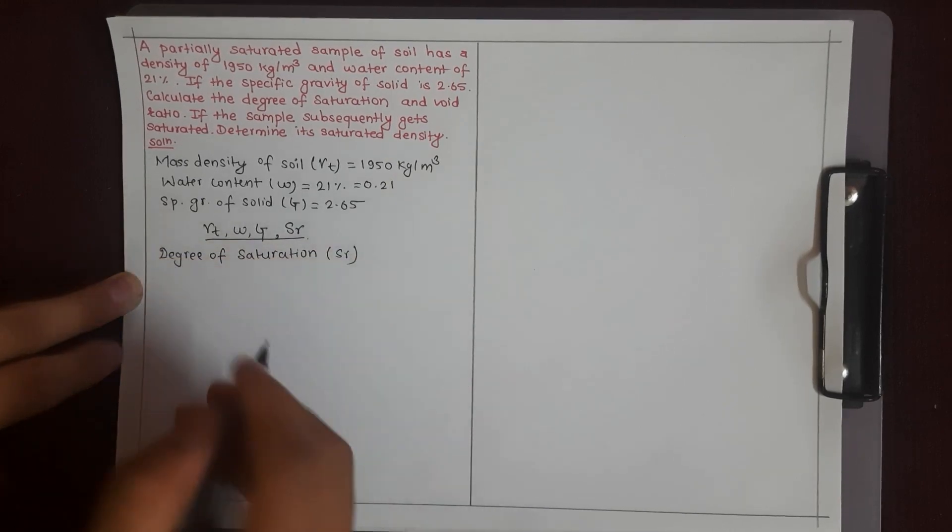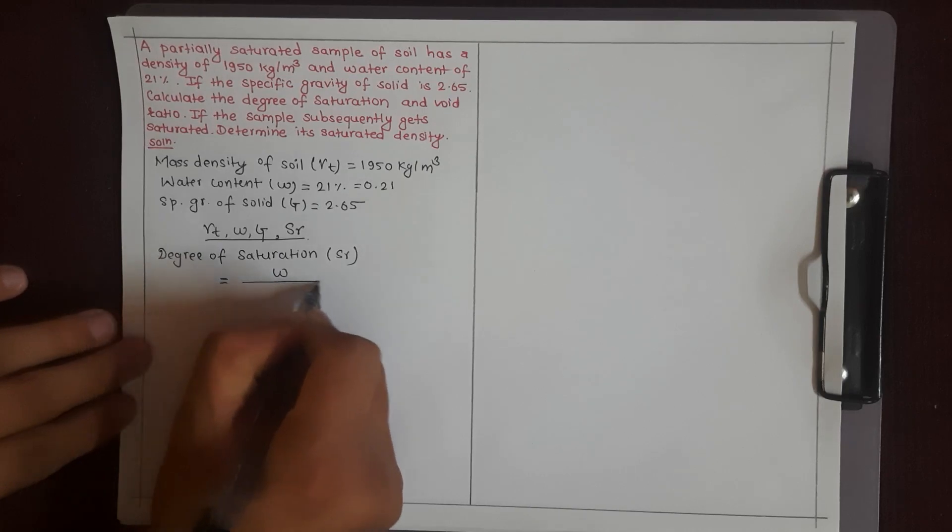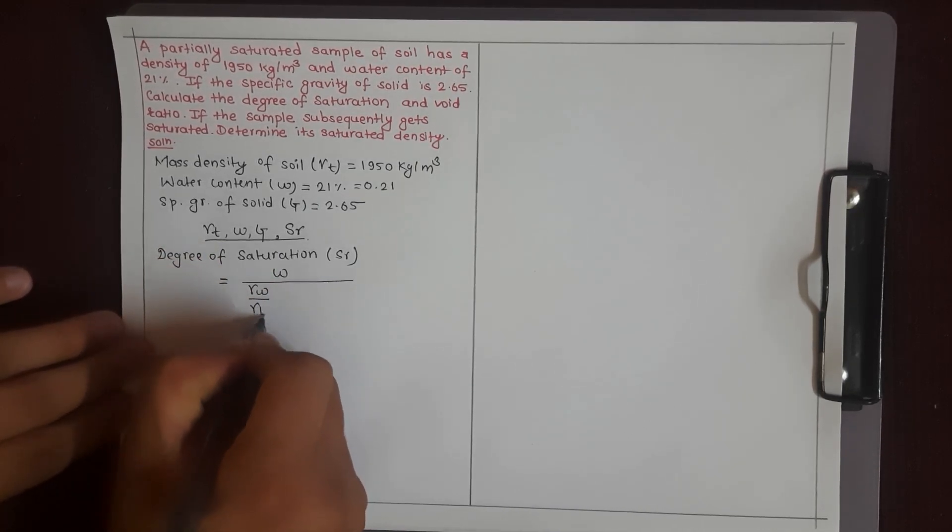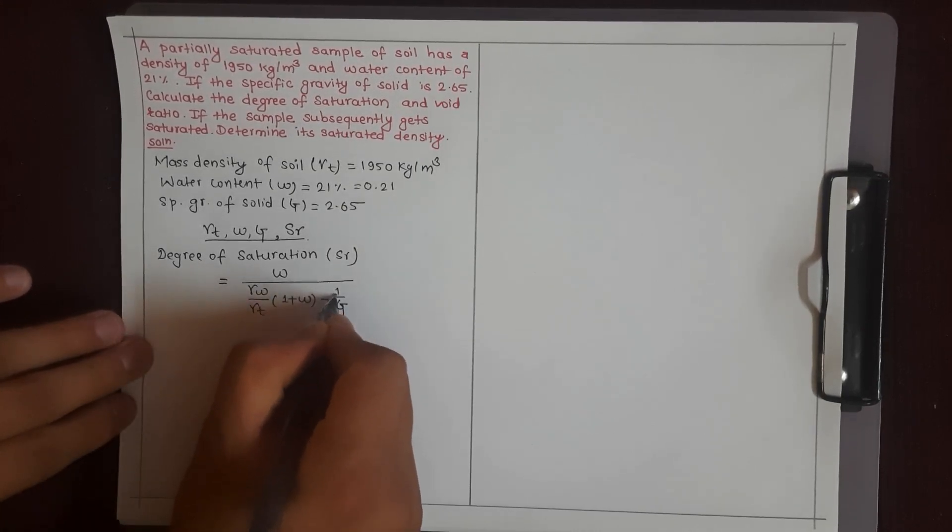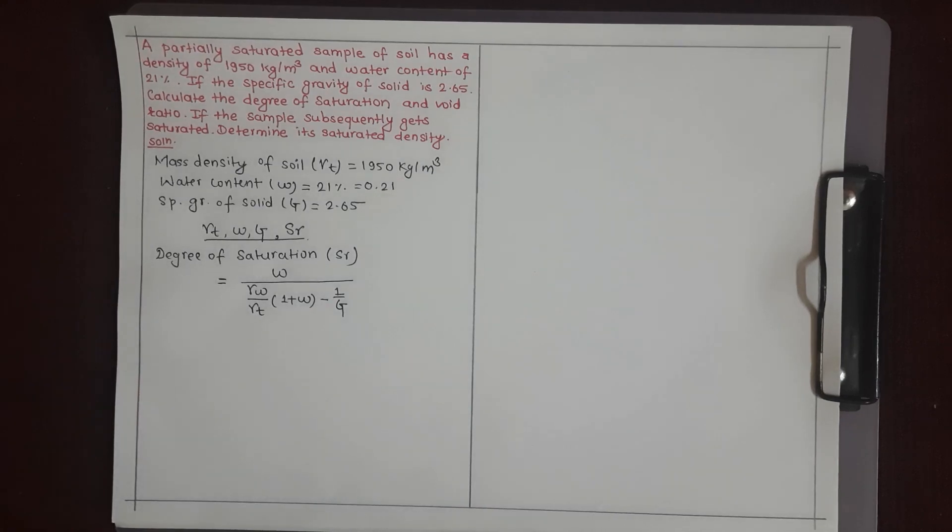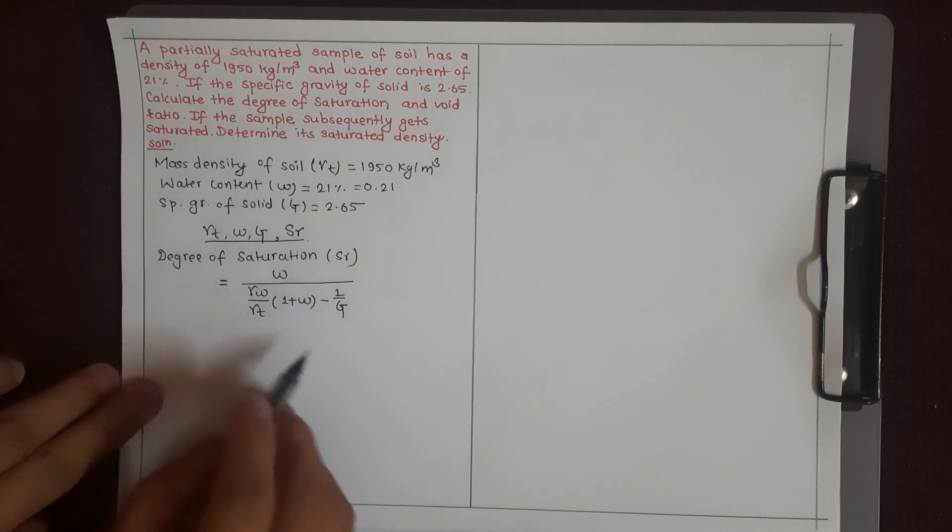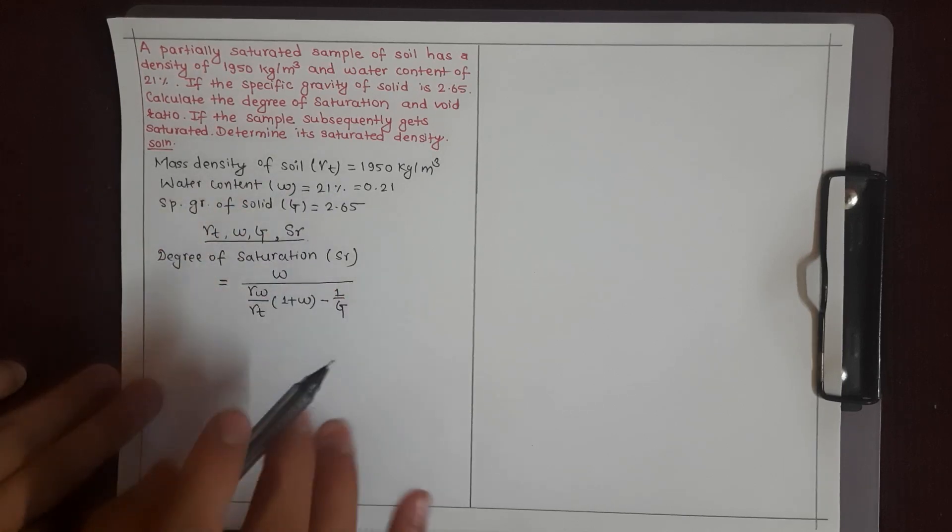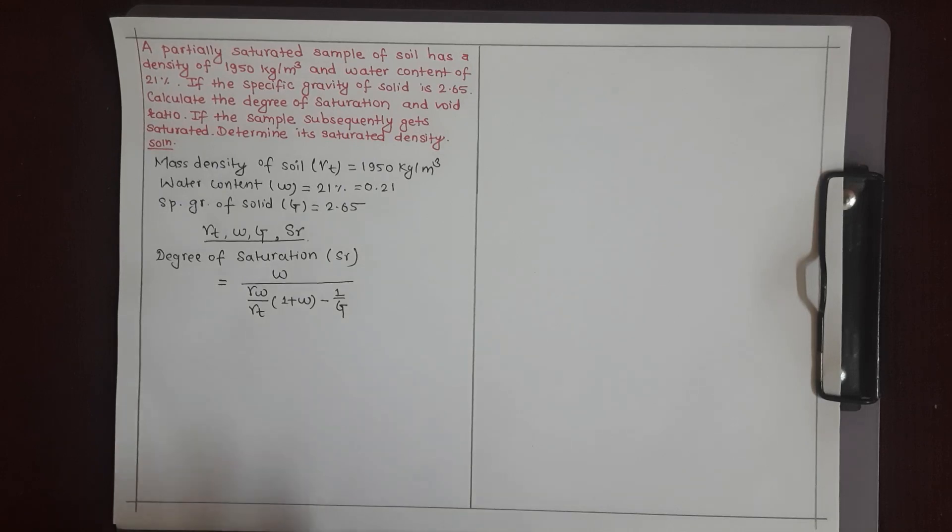The formula for degree of saturation involves water content w, gamma w, gamma T, specific gravity G, and void ratio e. We can use these values to calculate the degree of saturation.